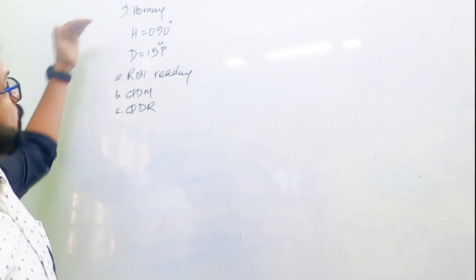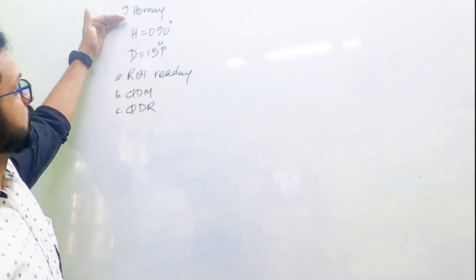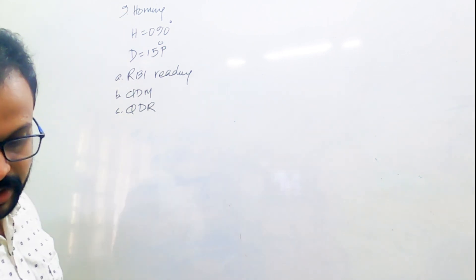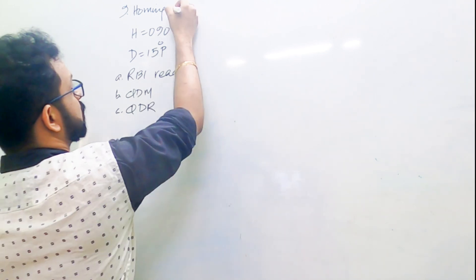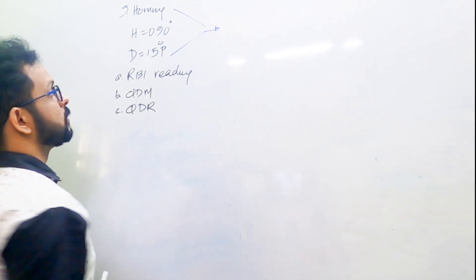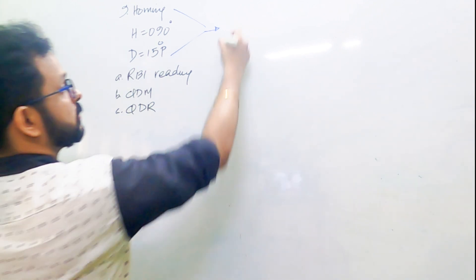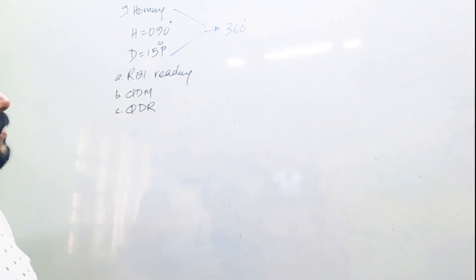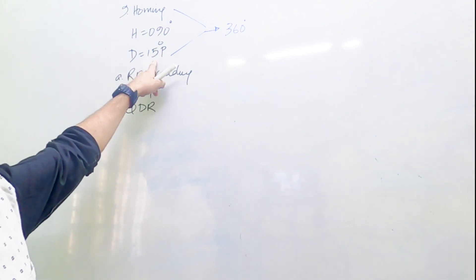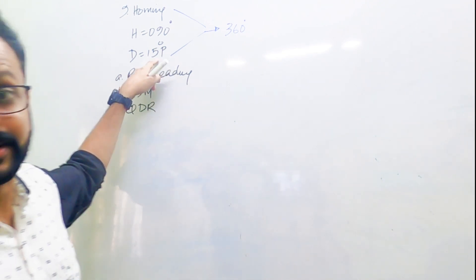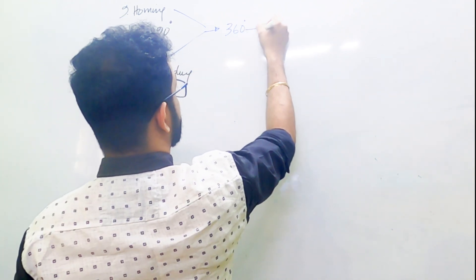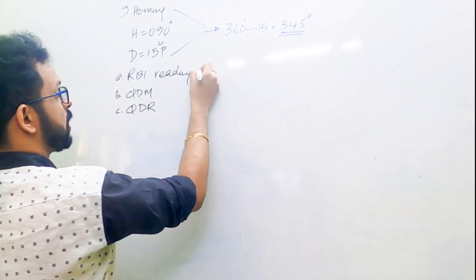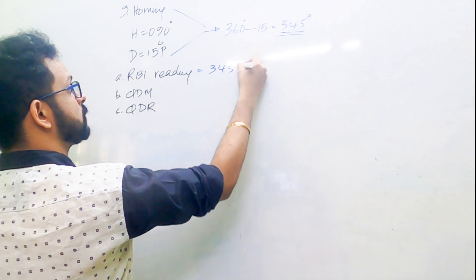The aircraft is homing into a station with 15 degrees port drift. What would the ADF indication as an RBI show? When homing, you're looking at around 360 degrees moving towards the station. With 15 degrees port drift, port drift is always subtracted from 360 — so 360 minus 15 gives 345 degrees. The RBI indication is 345 degrees.